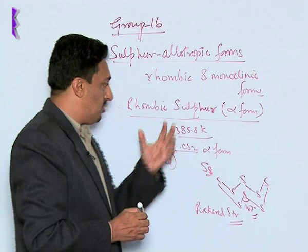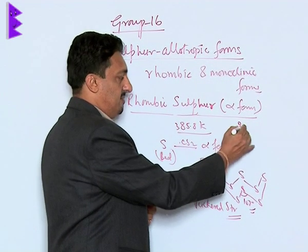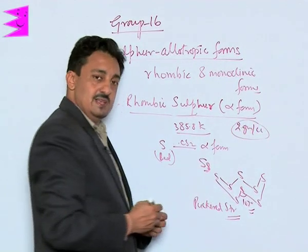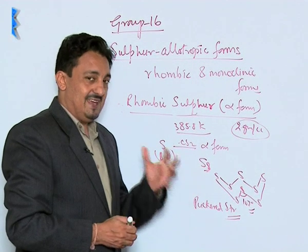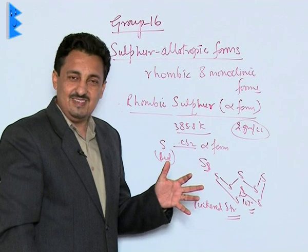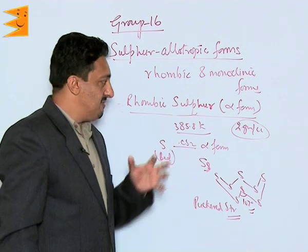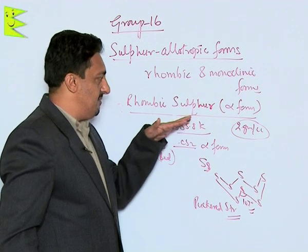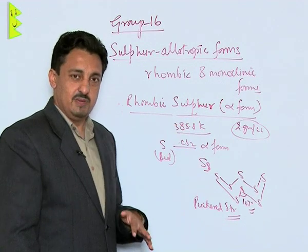Rhombic Sulphur has a specific gravity of approximately 2 g/cc. It is insoluble in water but soluble in organic solvents like benzene and CS2. It is the most stable allotropic form of Sulphur at room temperature.